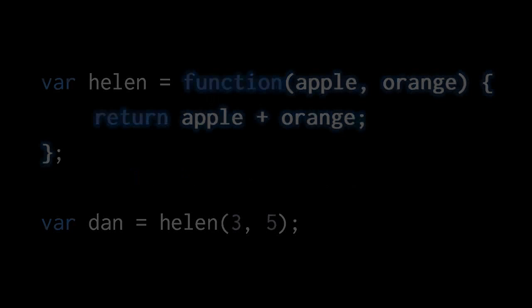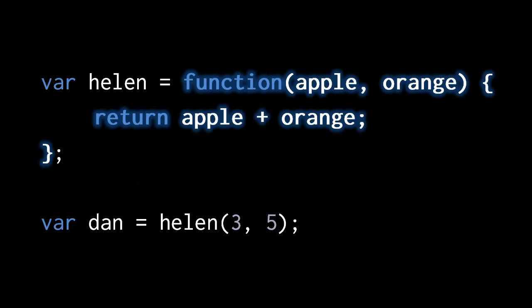Here in this code we're declaring a variable named Helen and assigning it a function. That function has two parameters — the first called apple, the second called orange — and there's one statement in the body that simply returns apple plus orange. Notice that we end with a semicolon because this is a variable declaration statement. If we then create a variable named Dan and assign it the value returned by Helen with the arguments 3 and 5, then Dan is assigned the value 8.